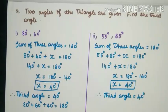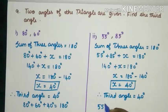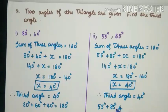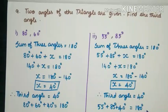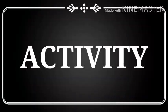To check: 55 + 85 + 40 = 180°. The sum of three angles equals 180°, confirming the answer. Students, let's see today's activity.